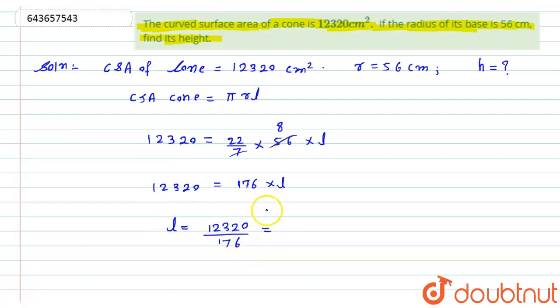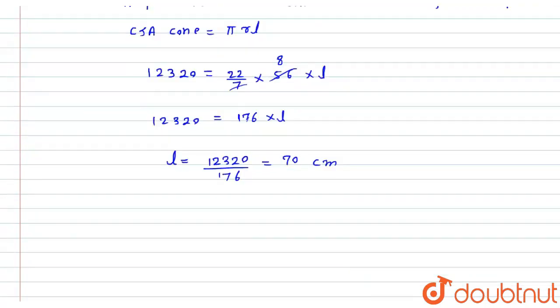Now by using the formula, I can find the height of the cone. As we know the formula, h square equals l square minus r square.